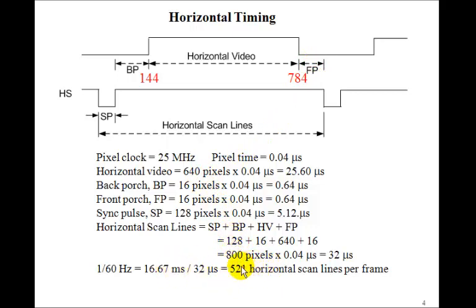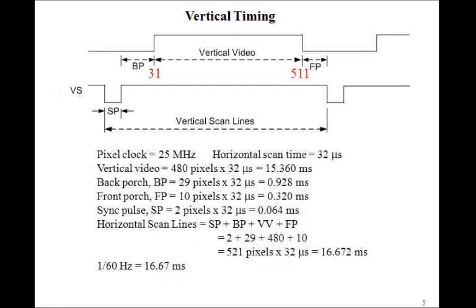Remember, the total number of horizontal scan lines is going to be 521. So we have a similar diagram for the vertical timing. In this case, the sync pulse is only going to be for 2 pixels. We'll add the back porch, 29. That'll get to 31. So remember this 31 number. And then we add the 480 pixels for the vertical size of the image. We'll get to 511. And then if you add the front porch, we'll get up to 521, which is the total vertical timing. So we'll need a vertical counter as well, which will count from 0 to 521.